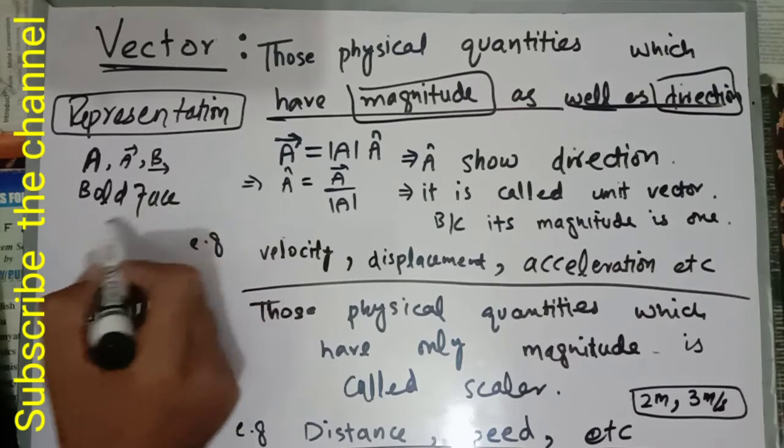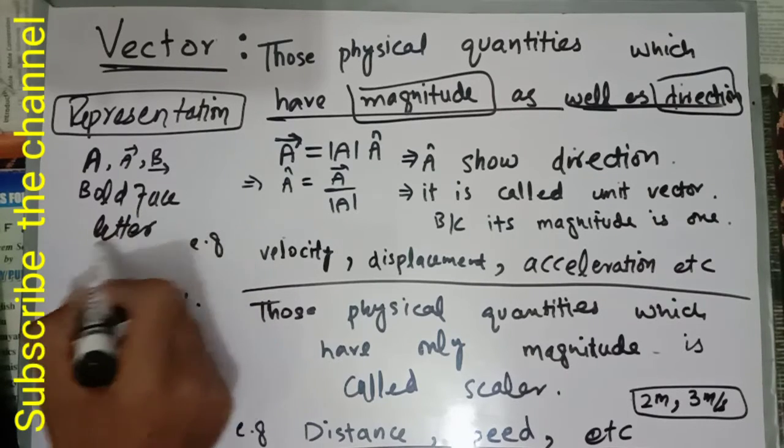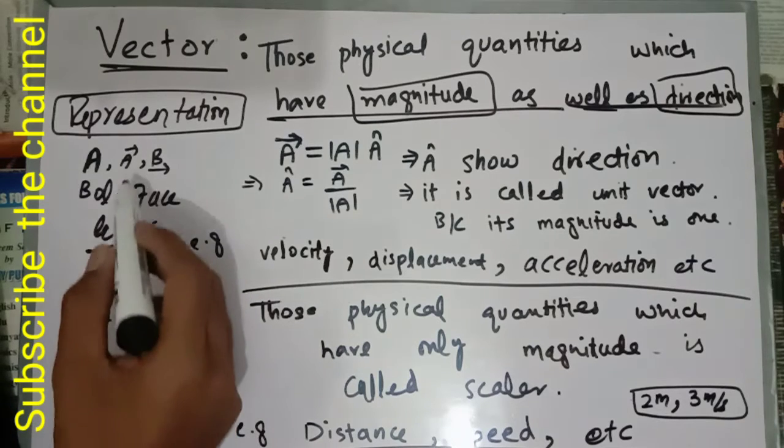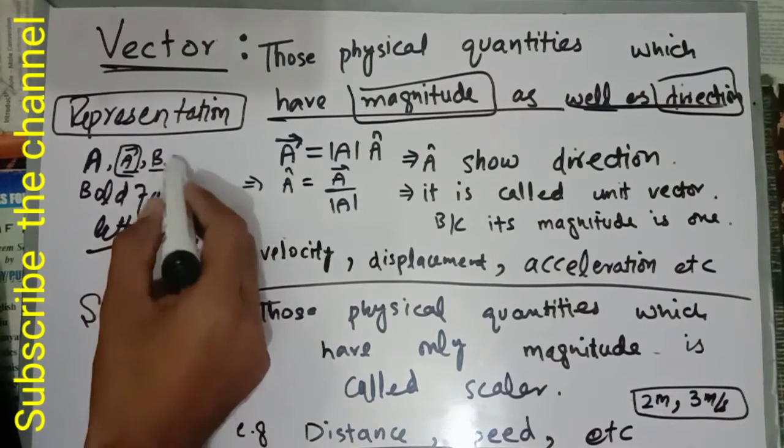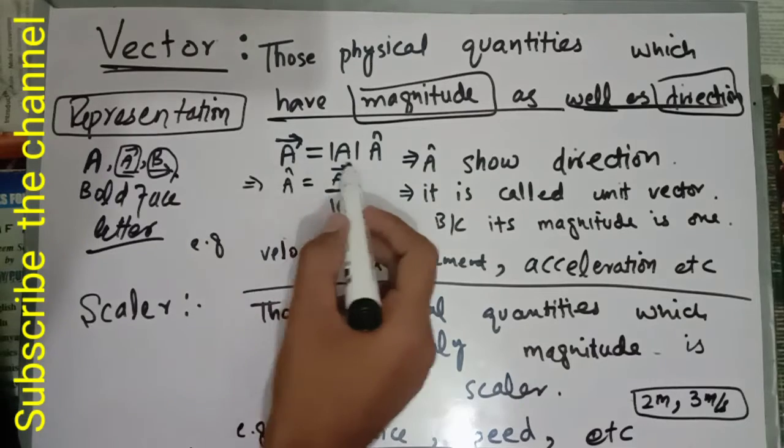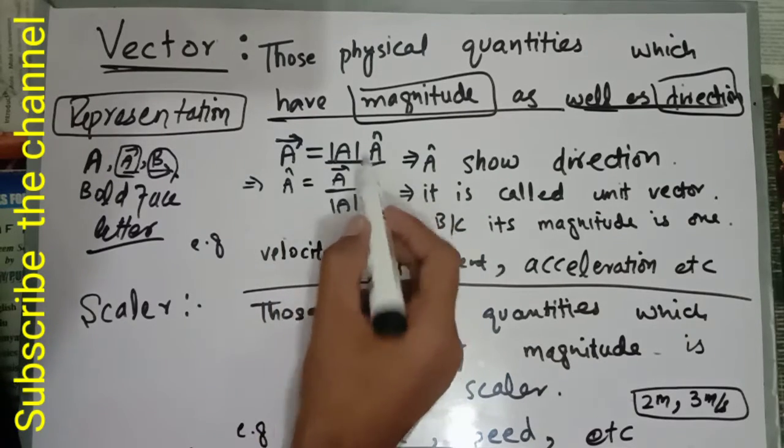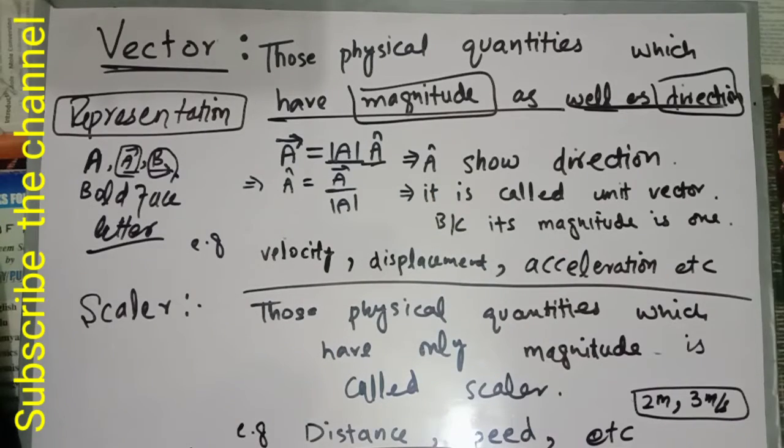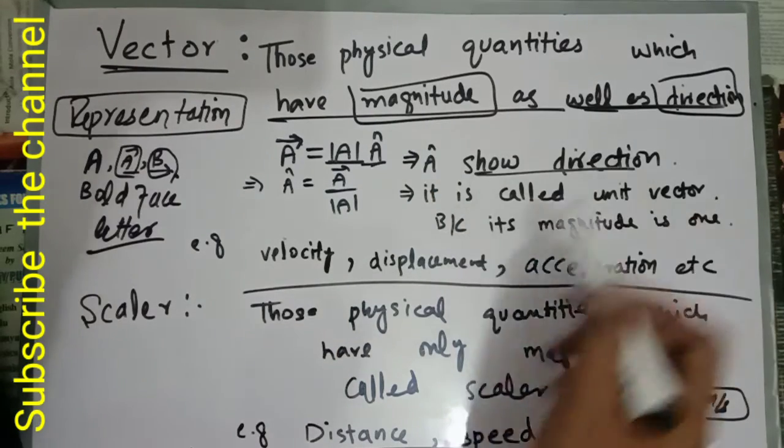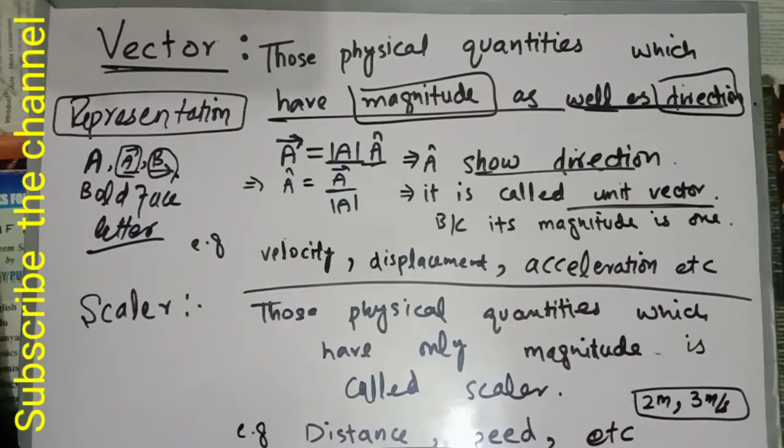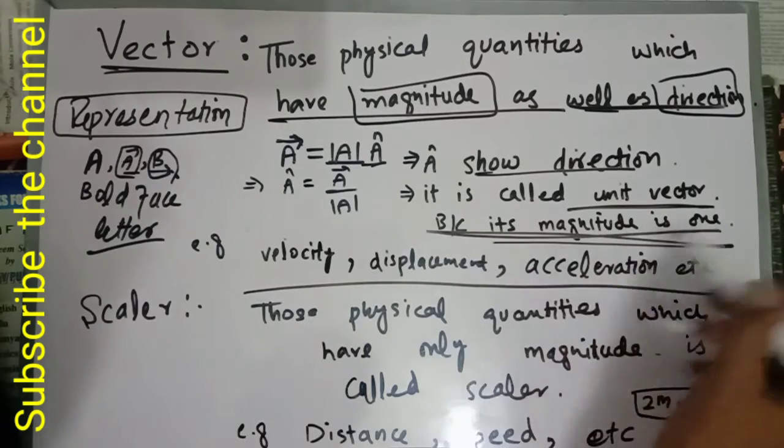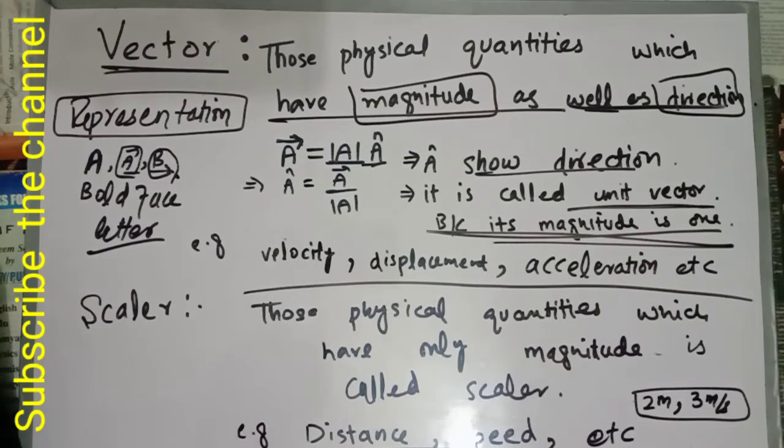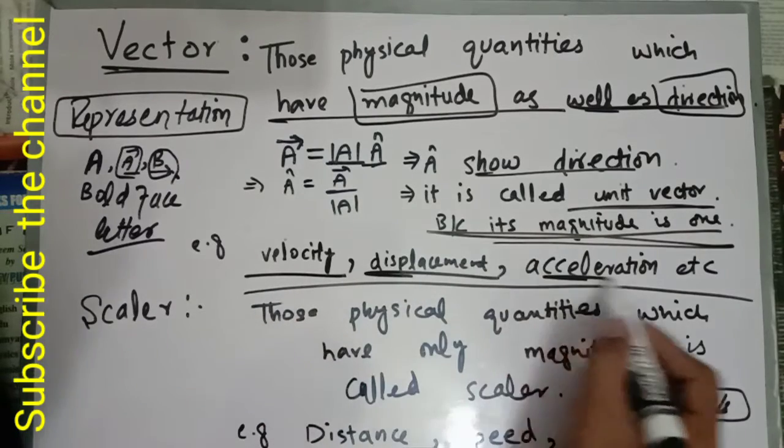Vectors are represented with both magnitude and direction. When a vector has a magnitude of 1, it is called a unit vector. Examples include velocity, displacement, and acceleration.